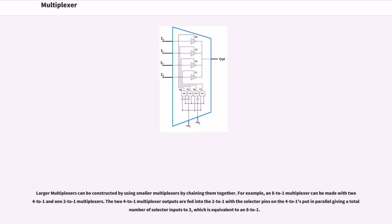Larger multiplexers can be constructed by using smaller multiplexers by chaining them together. For example, an 8 to 1 multiplexer can be made with 2 4 to 1 and 1 2 to 1 multiplexers. The 2 4 to 1 multiplexer outputs are fed into the 2 to 1 with the selector pins on the 4 to 1's put in parallel giving a total number of selector inputs to 3, which is equivalent to an 8 to 1.